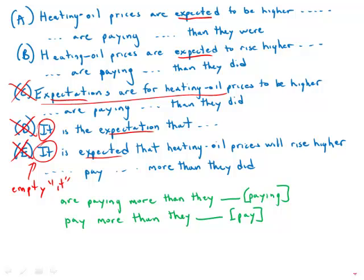One of the differences between A and B is just this final word. So what exactly is going on here? When we have a comparison, the two terms of the comparison are in parallel. And what that means is that we can omit common words. So we are saying are paying more than they blank. We're implying that the same word paying appears at the end. And so the question is what helping verb should go in front of paying?